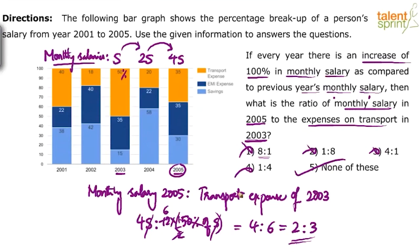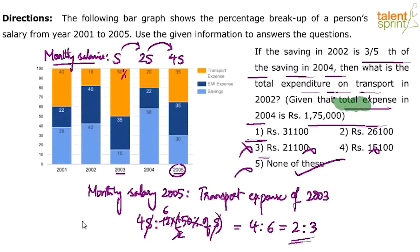After discussing these three questions, the conclusion is you have to pay attention to the wording of the question. In the last question, most of you did not notice the word 'monthly.' In the previous question, most of you did not focus on the word 'expense' — it was the total expense of 2004 at ₹1,75,000, not the total salary.